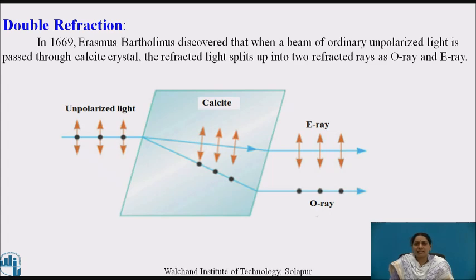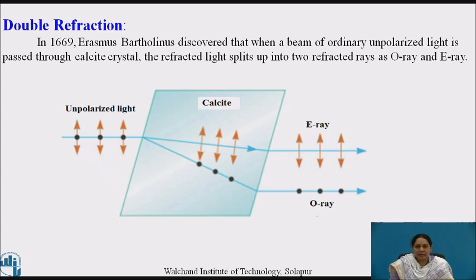Within the crystal, the O-ray always lies in the plane of incidence, whereas the E-ray does not lie in the plane of incidence in a principal section. The O-ray and E-ray are linearly polarized. The E-ray has its vibrations parallel to the principal section, whereas vibrations in the O-ray are perpendicular to the principal section. The O-ray travels with the same velocity in all directions in a crystal, whereas the E-ray travels with different velocities in different directions. Hence, the refractive index of the O-ray is constant, while the refractive index of the E-ray varies and has a maximum or minimum value. The difference between these refractive indices is known as the amount of double refraction or birefringence.